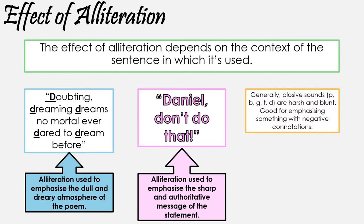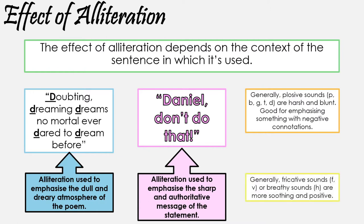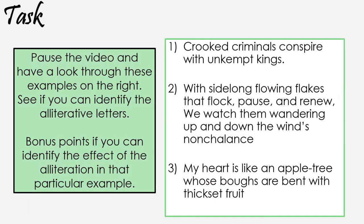That said, generally plosive sounds such as P, B, G, T, and D can sound quite harsh and blunt. They're quite good for emphasizing something with negative connotations. More fricative sounds such as TH and V, or more breathy sounds such as H, are a bit lighter and a bit more soothing. Note that I'm saying generally — these aren't hard and fast rules, they're generalizations. So pause the video and have a look through the examples. See if you can identify the alliterative letters, and bonus points if you can note down the effect of the alliteration in each example too.